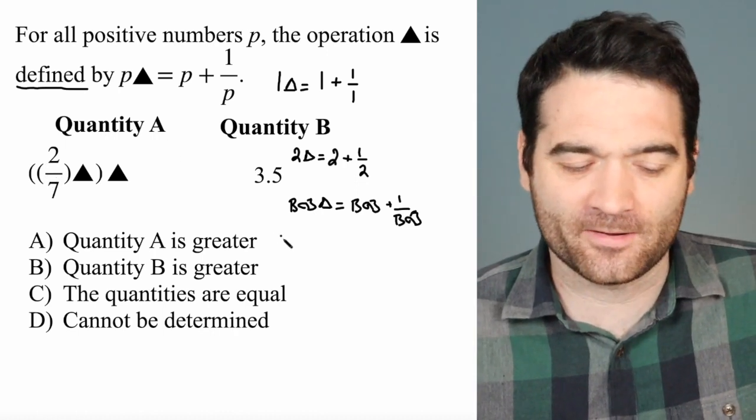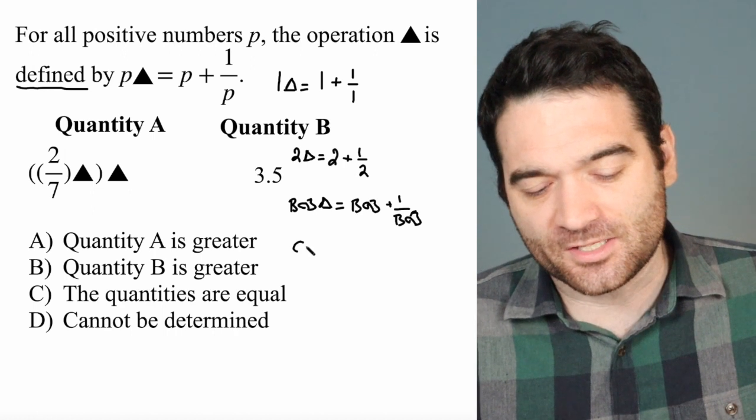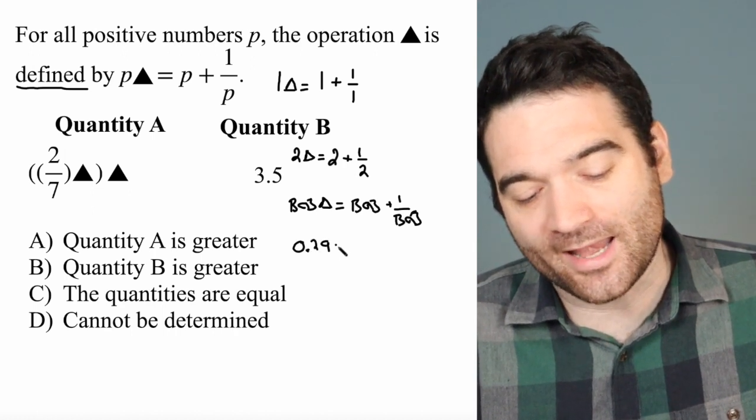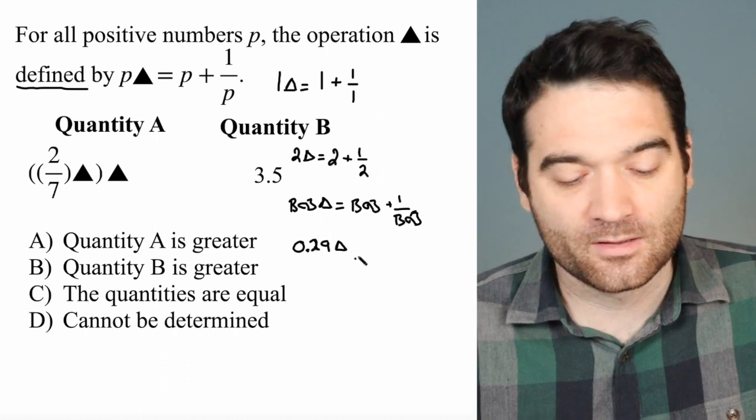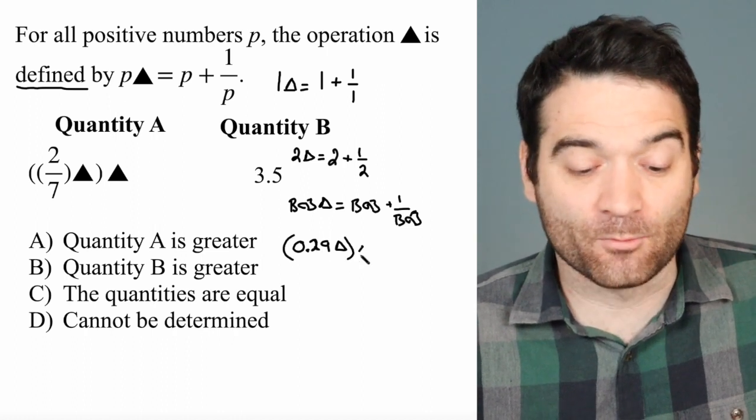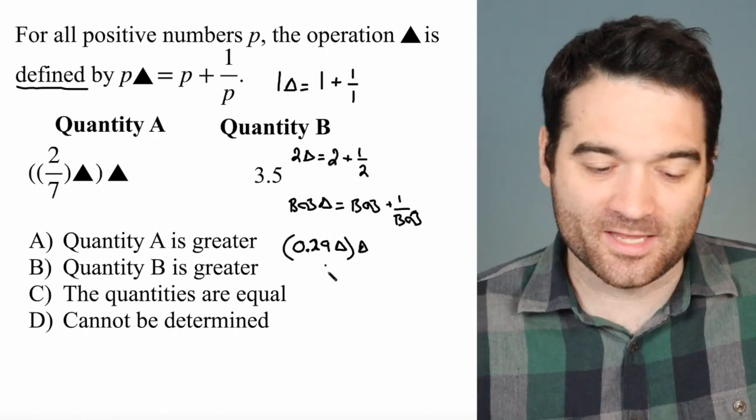So really what this is, is 0.29 triangle, right? 0.29 triangle, and then we'll do another triangle after that. But let's start with the inside one.